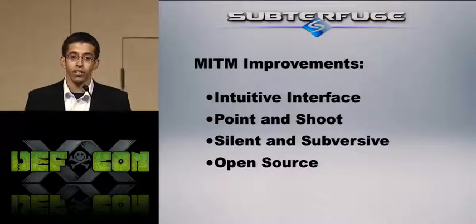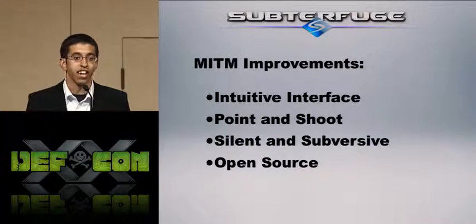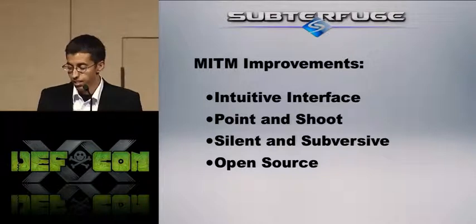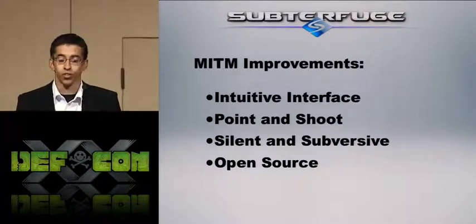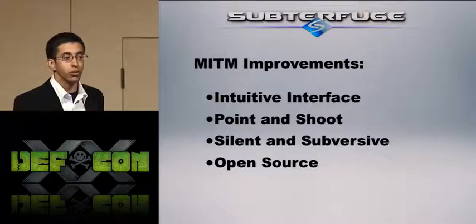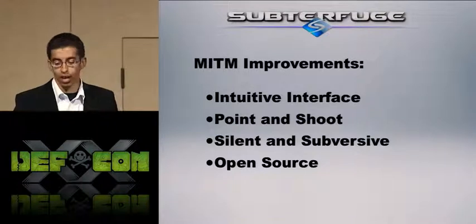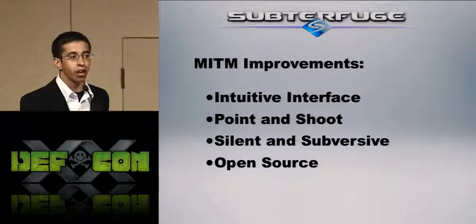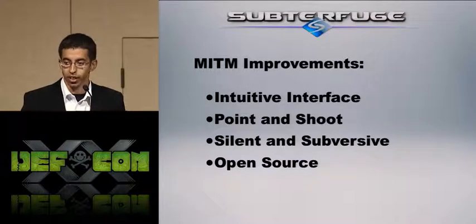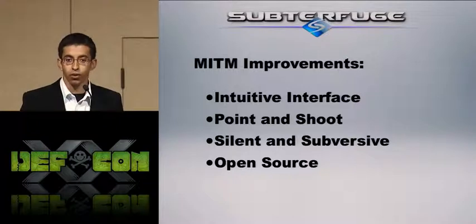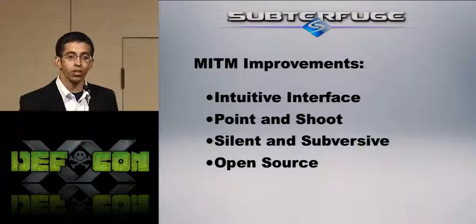It's also very point-and-shoot. There's a start button in the right-hand corner. You click the start button, it asks if you want it to do everything for you, you hit okay, and you're on. It's also really silent and subversive. Unlike most man-in-the-middle tools that spam ARP, Subterfuge has a couple innovations when it comes to poisoning a network that really allow it to be a lot more silent.